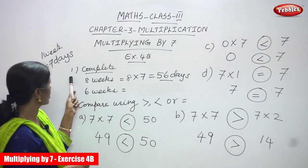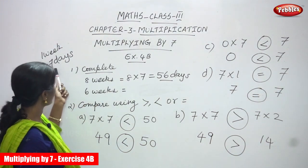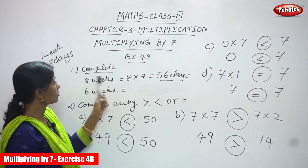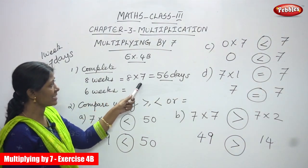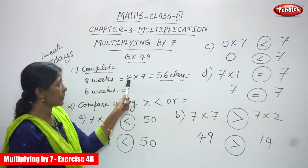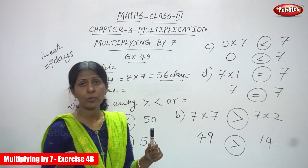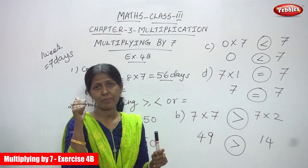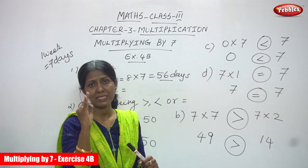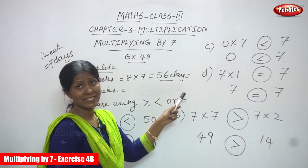Now we are going to see complete. 8 weeks — 1 week is equal to 7 days, so 8 into 7. You have to say the 7th table up to 8 times: 7 ones are 7, 7 twos are 14, 7 threes are 21, 7 fours are 28, 7 fives are 35, 7 sixes are 42, 7 sevens are 49, 7 eights are 56. The answer is 56 days.